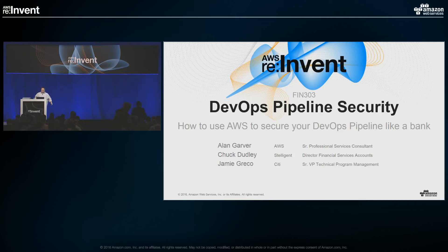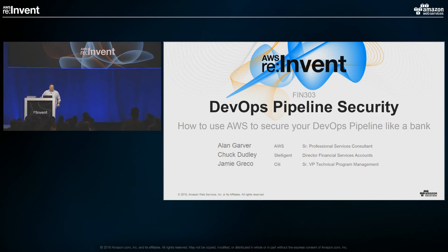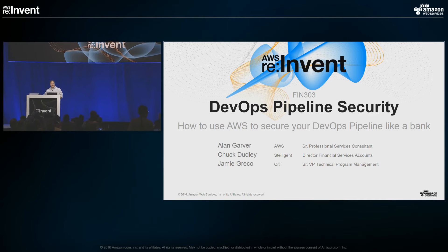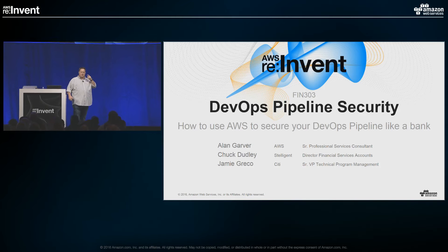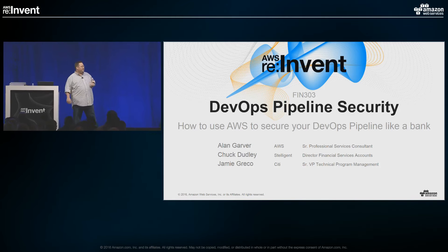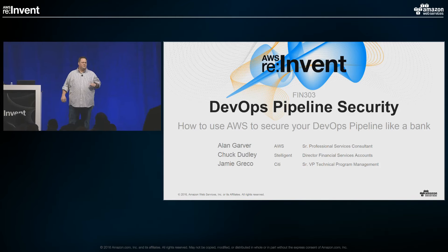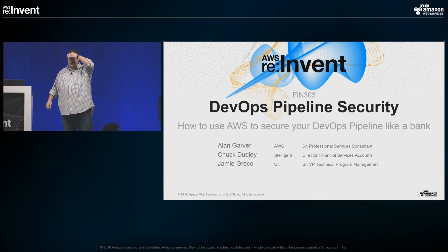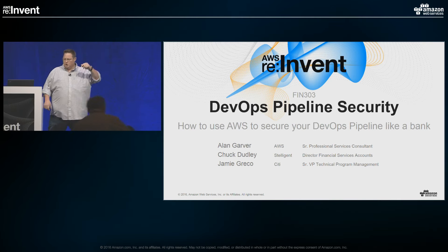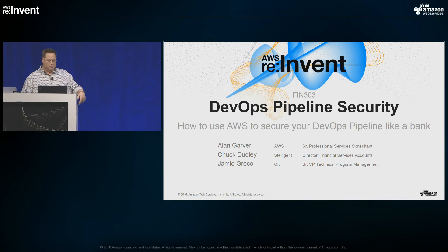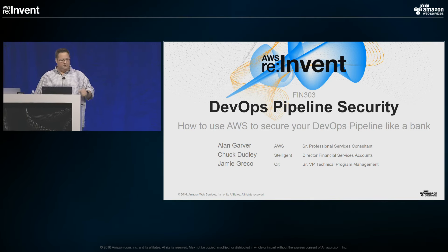Hey everybody. Welcome to FIN 303. We're going to be talking about DevOps security in a pipeline today — we're a minute early, which is fine. We've got a lot to get through, so we're going to rush through it a little bit.